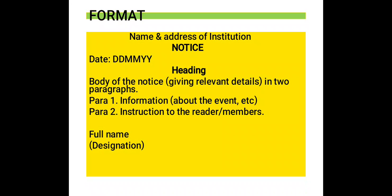For the format: write the name and address of the institution at the top of the box. Then comes the word NOTICE in block letters and bold. Then comes the date in DD/MM/YY format. Then comes your heading. Then comes the body of the notice, which must consist of at least two paragraphs — the first with information about the event, and the second with instructions to the reader or members. Then comes your full name with designation at the bottom of the box.